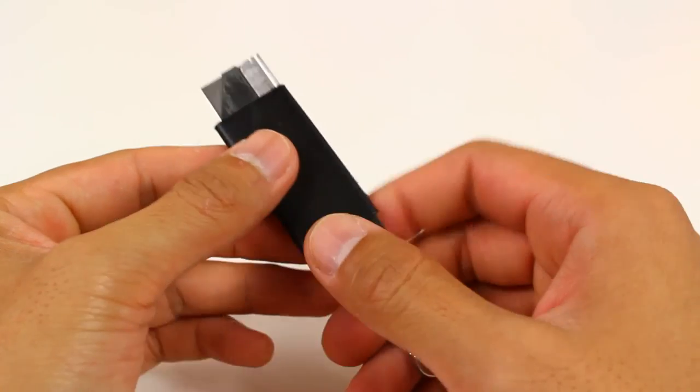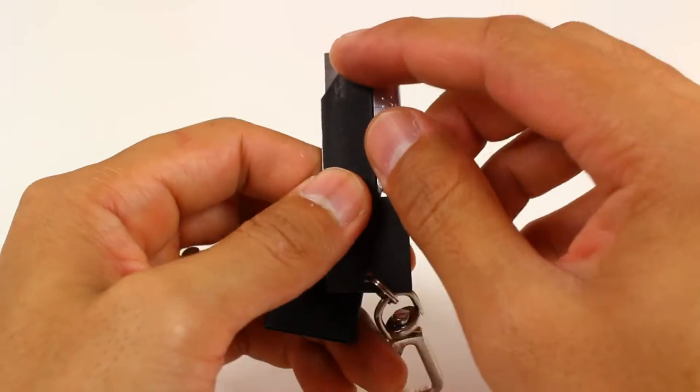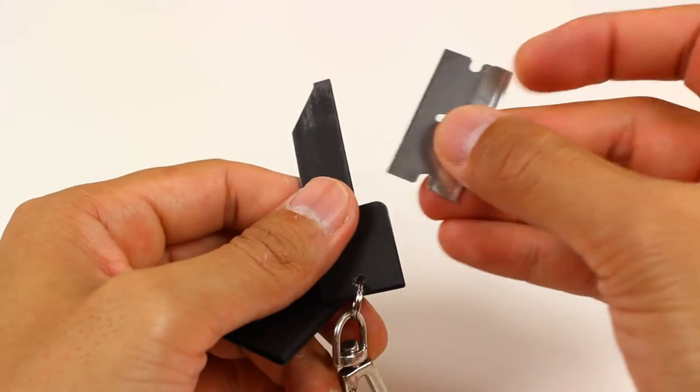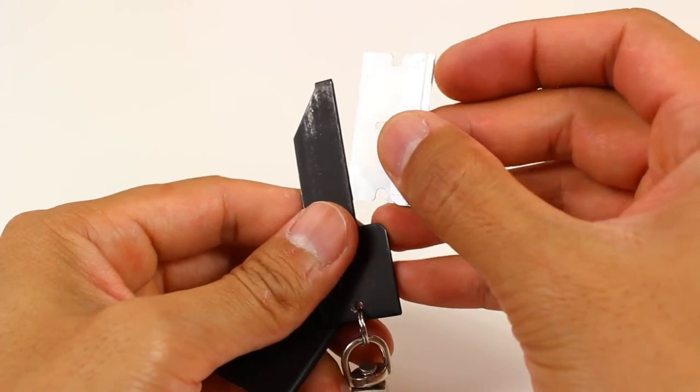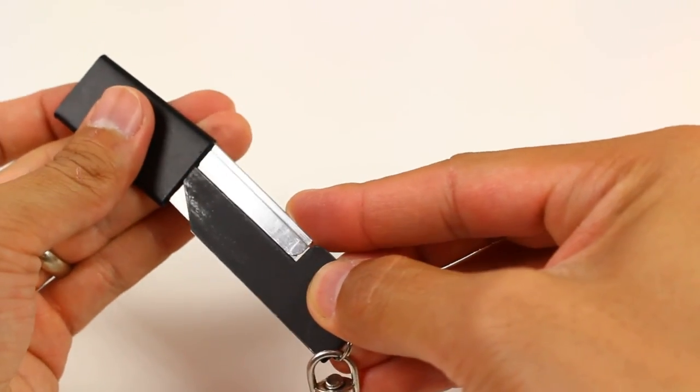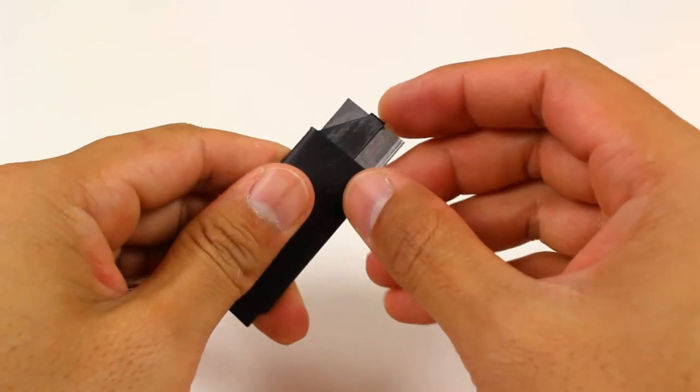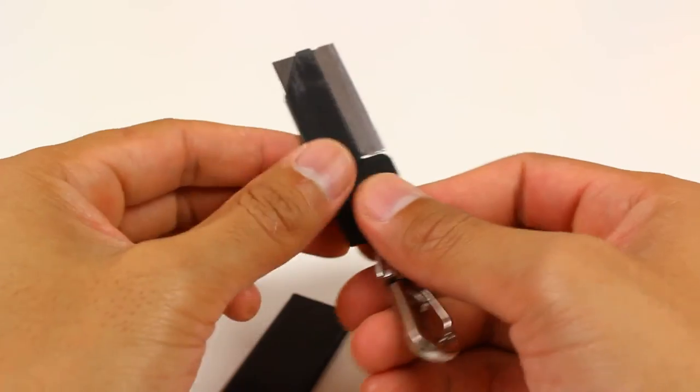The knife uses single edge razor blades, so if ever this point becomes dull, just flip it around and tuck it in and put it back in. Now you have a nice sharp edge and you can completely replace the blade of course.